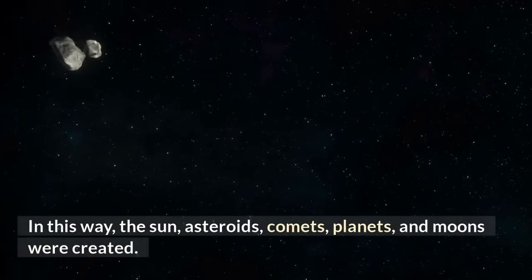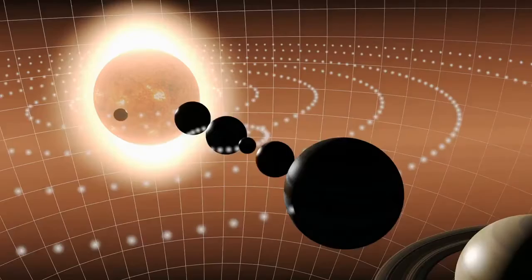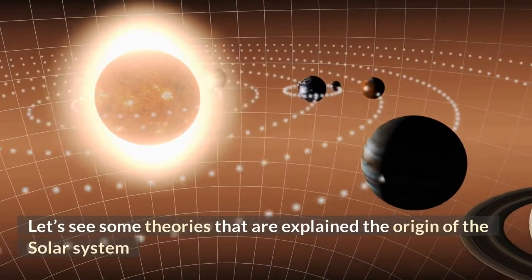In this way, the sun, asteroids, comets, planets, and moons were created. Let's see some theories that are explained the origin of the solar system.